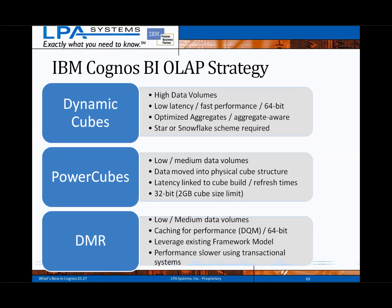To summarize where Dynamic Cubes fit into the IBM Cognos BI OLAP offerings: they are designed to provide high-performing, aggregate-aware relational OLAP solutions on top of very large databases, and the initial release requires the source database be modeled as a star or snowflake schema. Power Cubes remain a very viable part of the Cognos BI platform for customers with low-to-medium data volumes satisfied with the data latency process and limitations such as cube size and dimension member limits. DMR, or dimensionally modeled relational via the Dynamic Query Mode, is still appropriate for low-to-medium data volumes where direct access to the most current data is required, or the data source is transactional in nature and not designed as a star or snowflake schema.